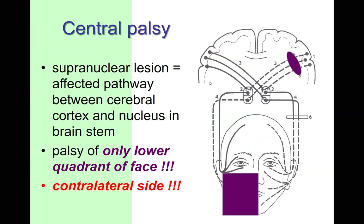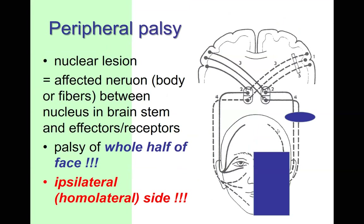For the facial nerve, we distinguish central and peripheral palsy. For peripheral palsy: if you destroy the nucleus or the nerve anywhere below it, we have problems with facial muscles in addition to the gland and taste problems already discussed.